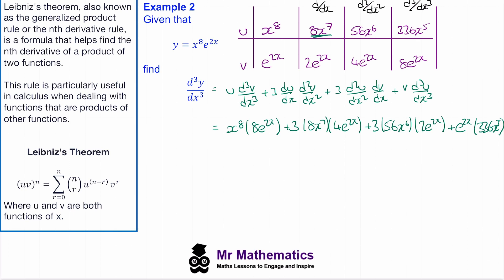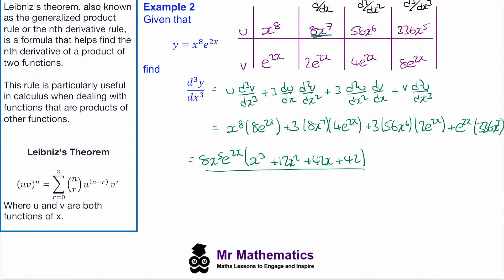We can tidy this up by factorising out x⁵, the factor of 8, and e^(2x), giving us 8x⁵·e^(2x)·(x³ + 12x² + 42x + 42), and this will be our third derivative of this function.